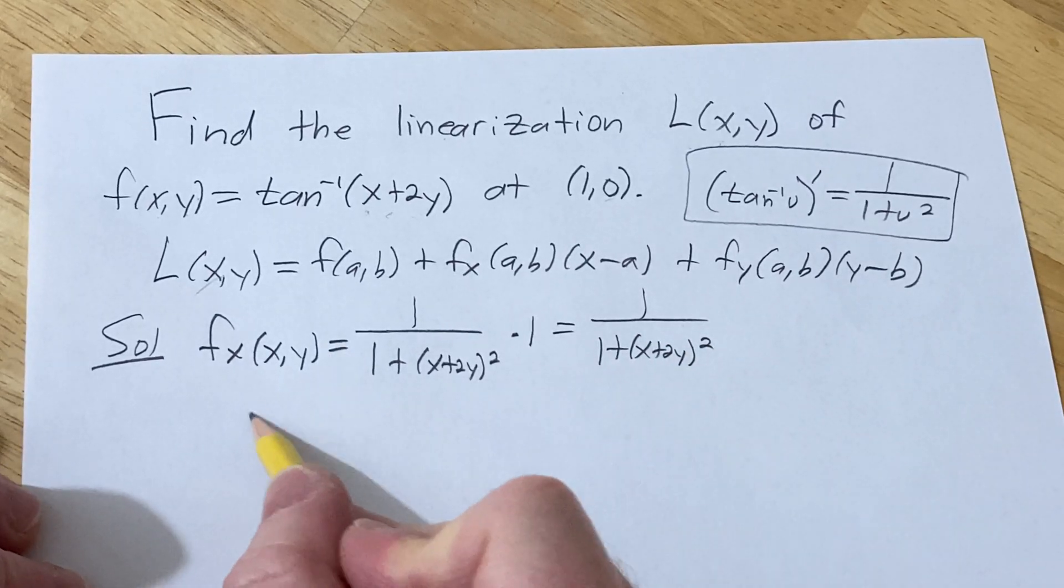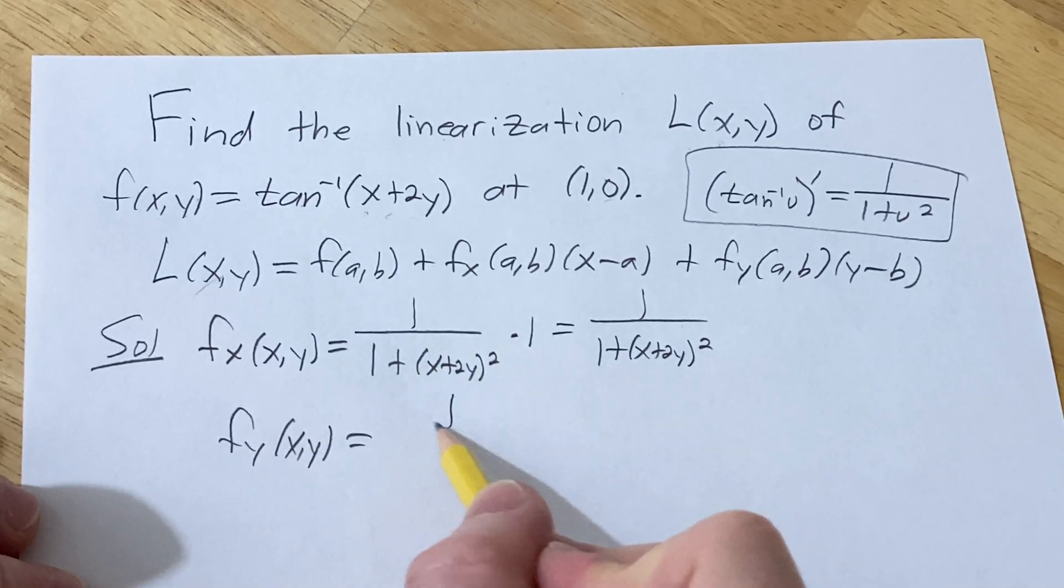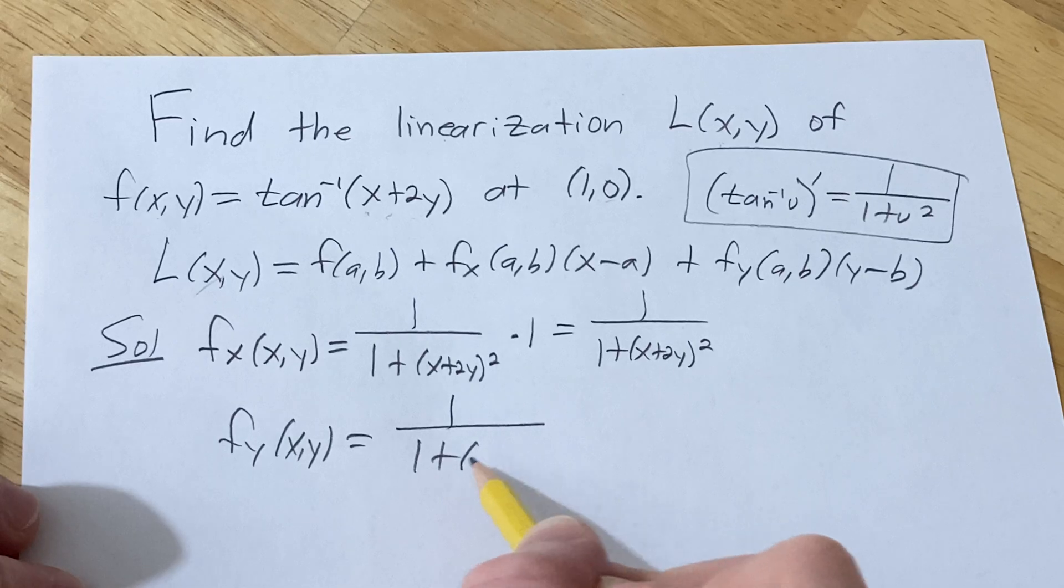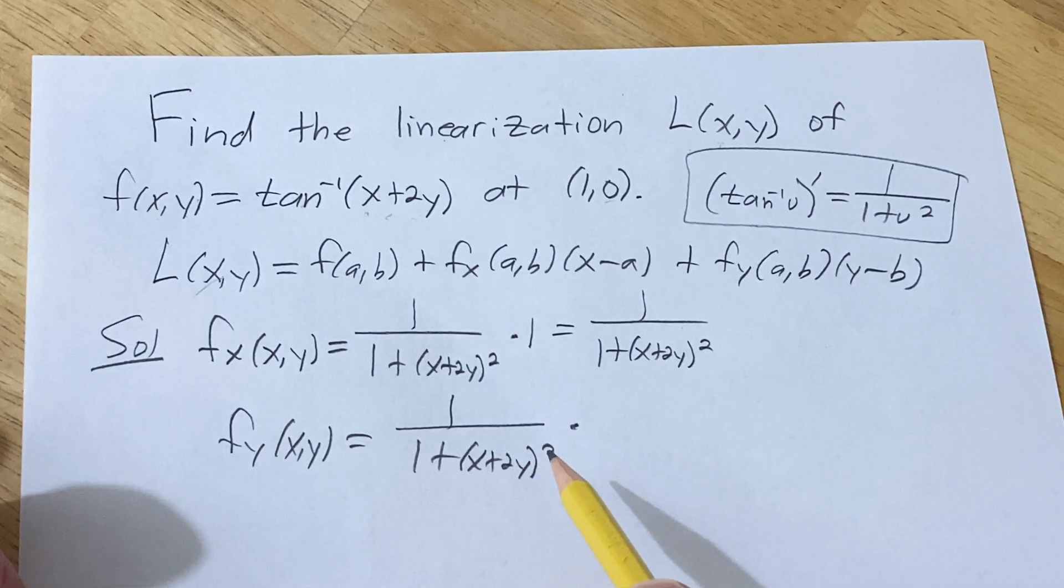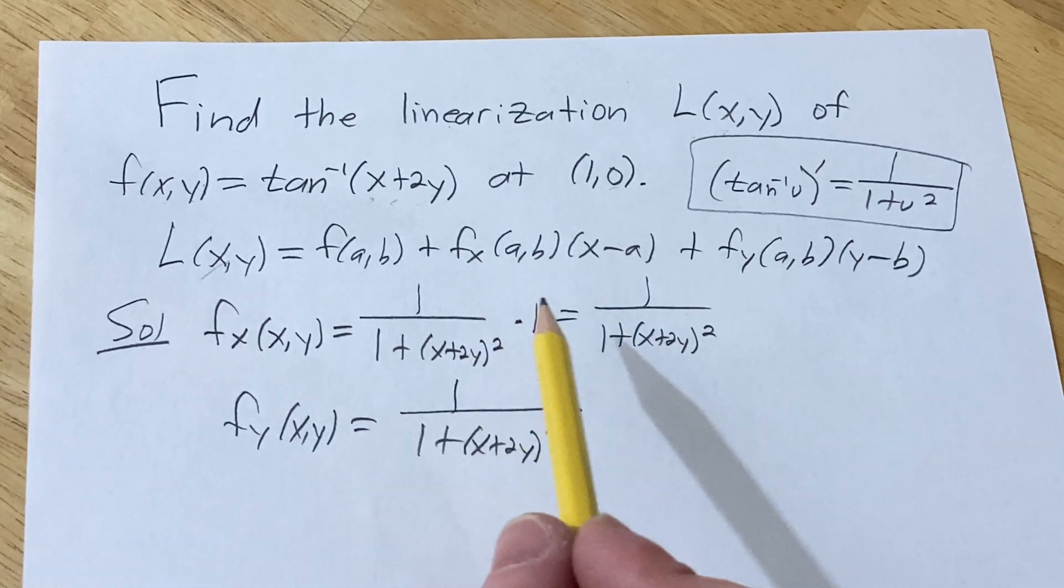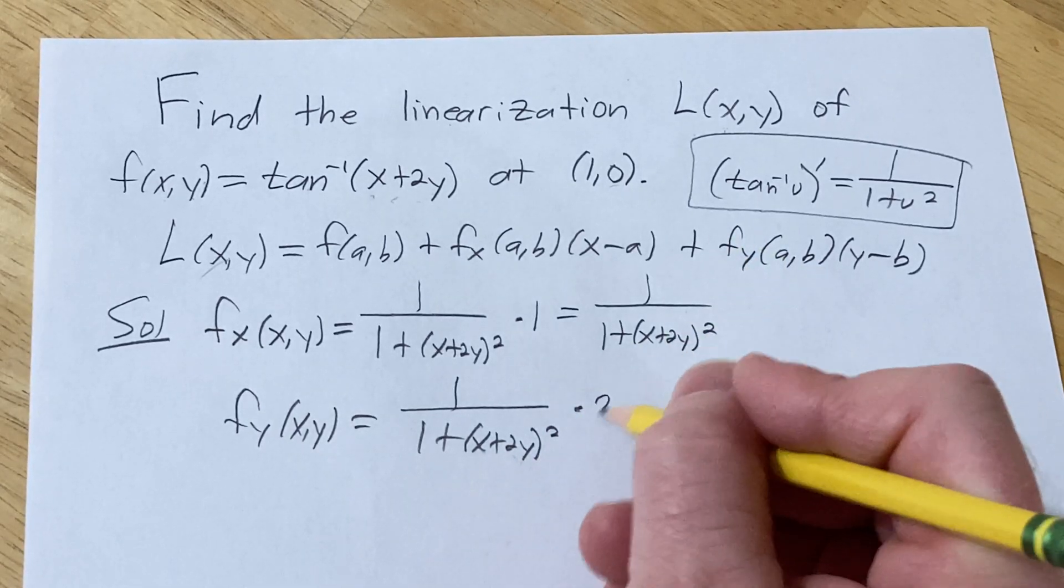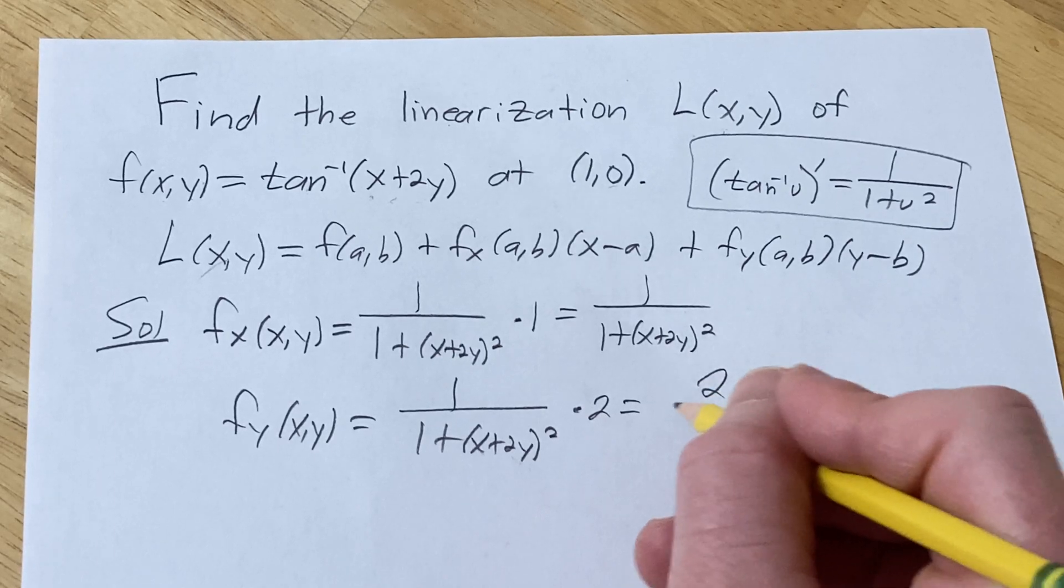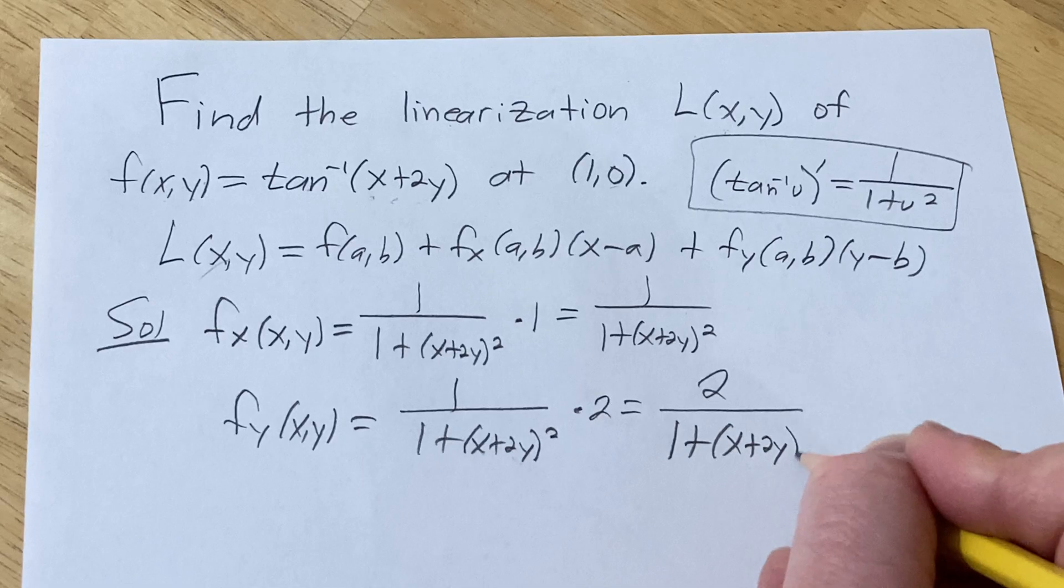Let's find the partial with respect to y. Same thing, 1 over 1 plus (x+2y) squared times the derivative of the inside. So in this particular case, we're looking for the derivative with respect to y. So the derivative of x is 0, there's a 2y here, so its derivative is just going to be 2. This is 2 over 1 plus (x+2y) squared.